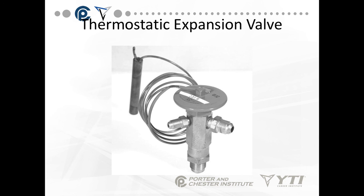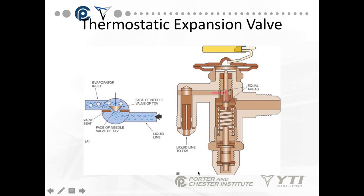This is an example of a thermostatic expansion valve. Your adjustments are on the bottom, normally covered by a brass cap. The liquid line comes in on one side, we have our adjustment from the bottom, and the other side comes out to the evaporator. The spring pressure is what you're adjusting. There's a little needle inside that allows the refrigerant to bypass more — if the needle is pushed up or down, it cuts off the flow.